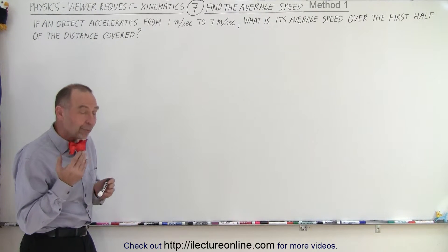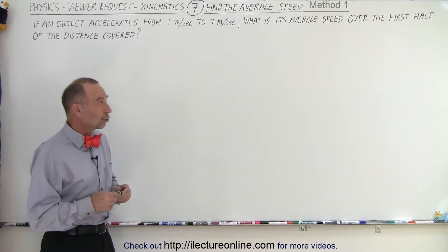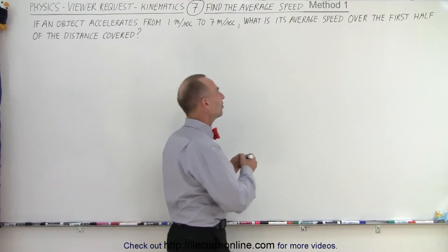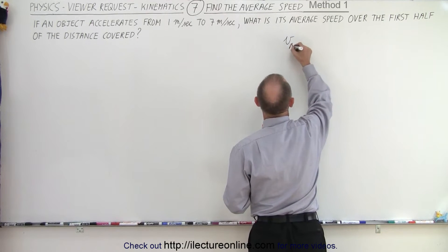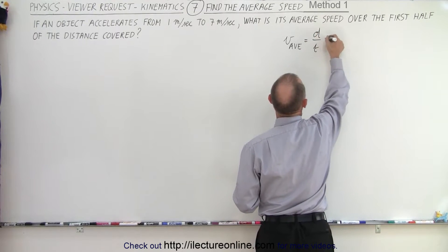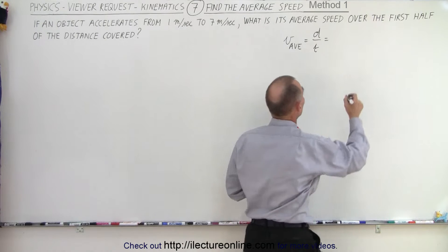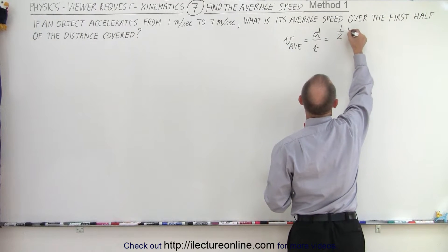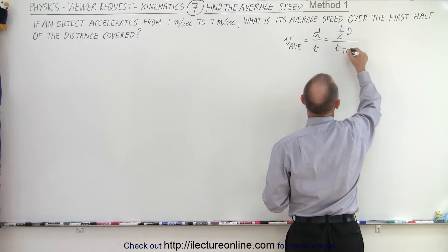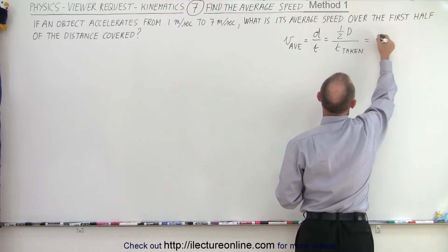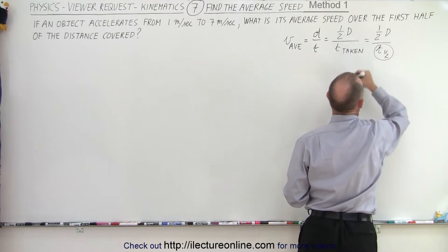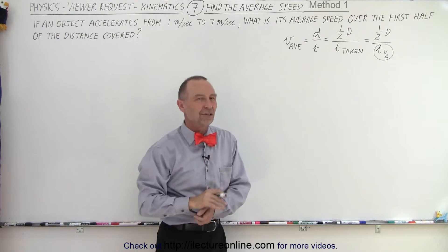The first thing I think about is perhaps using the graphical method, but first we should define what we mean by average velocity. In this case, the average velocity is equal to the distance divided by the time — specifically half the distance covered, so one half times D, where big D is the total distance, divided by the time taken, T sub one-half, which is the time it takes to cover half the distance.